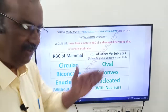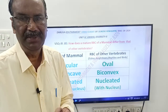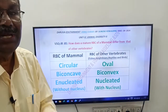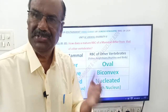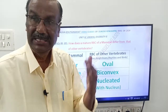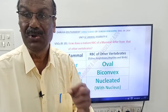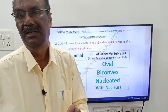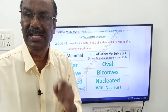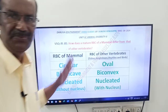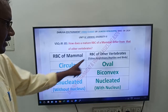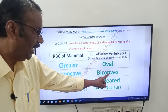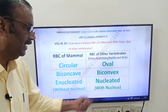Now, the RBC of other vertebrates — fishes, amphibians, reptiles, and birds — are oval in shape and biconvex. They are nucleated; they have a nucleus. So the RBC of all vertebrates except mammals have a nucleus. Summary: mammalian RBC are circular and biconcave and enucleated; other vertebrates' RBC are oval, biconvex, and nucleated.